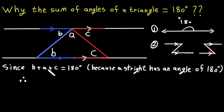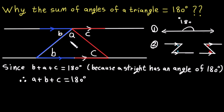Therefore, b plus a plus c equals a plus b plus c, so we can write it as a plus b plus c equals 180 degrees. The sum of the angles of a triangle equals the angle of a straight line. I hope this video clearly illustrates why the sum of interior angles of a triangle is 180 degrees. Feel free to comment below if you have any questions or suggestions. See you in the next video.